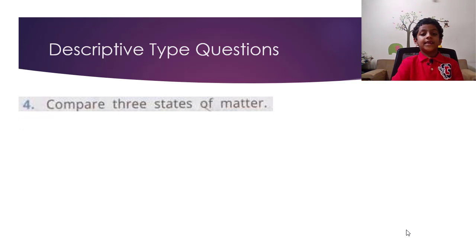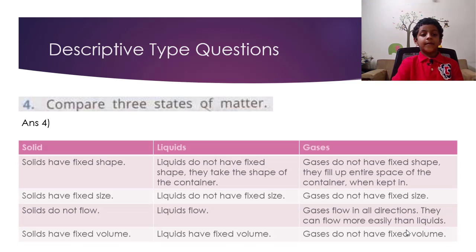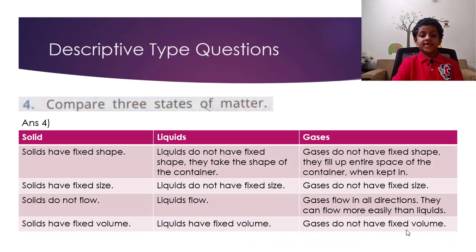Compare three states of matter. Answer: Solids have a fixed shape. Liquids do not have fixed shape, they take the shape of the container. Gases fill up the entire space of the container when kept in. Solids have fixed size. Liquids do not have fixed size. Gases do not have fixed size.